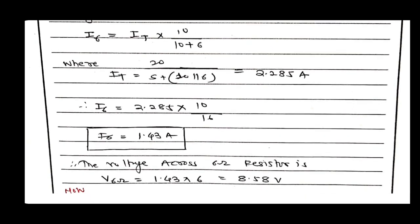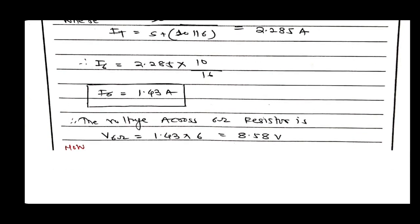The voltage across the 6-ohm resistance is calculated using Ohm's law: V = I × R. With I6 = 1.43 A and R = 6 ohm, V6 = 1.43 × 6 = 8.58 V. So the current through and voltage across the 6-ohm resistance from the original circuit are 1.43 A and 8.58 V respectively. Now we should draw the Norton equivalent circuit to cross-verify these values.